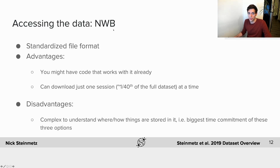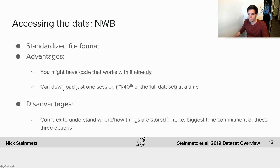Finally, you can access the data in the NeuroData Without Borders (NWB) format, a standardized file format that many datasets have been ported into. The main advantage is that you may already have code that works with it, and you can download just one session at a time. The disadvantage, in my opinion, is that NWB is complex to understand — if you're coming to it for the first time, it will require the most time investment to understand the file structure. If you haven't used NWB before, I'd probably not recommend starting here; but if you have used it before, you're all set.